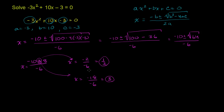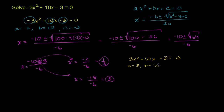I want to show you that we'll get the same answer even if we manipulate this. Some people might not like the fact that our first coefficient is a negative 3 — maybe they want a positive 3. So to get rid of that negative 3, we can multiply both sides of the equation by negative 1. If we do that, we get 3x squared minus 10x plus 3 is equal to 0. In this case, a is equal to 3, b is equal to negative 10, and c is equal to 3.